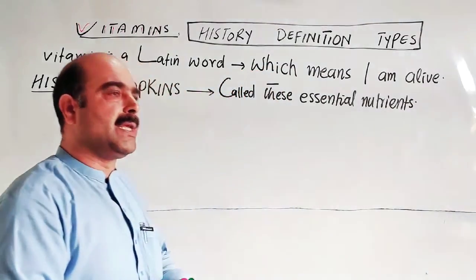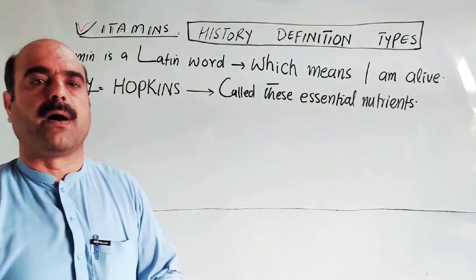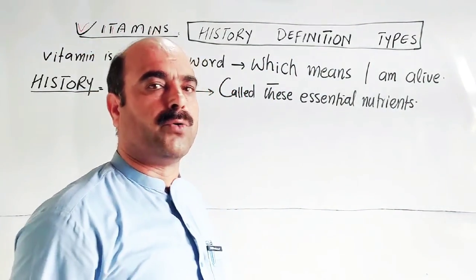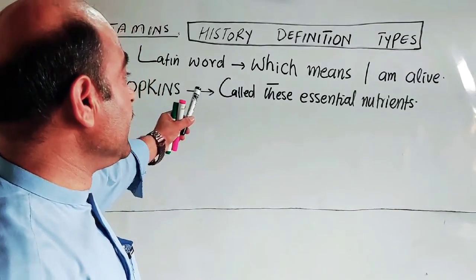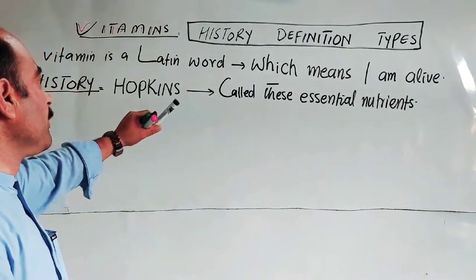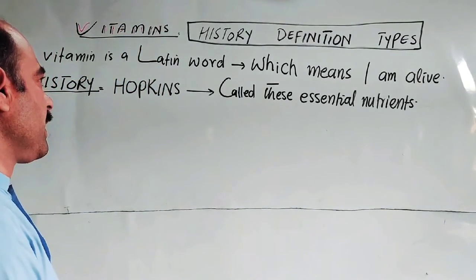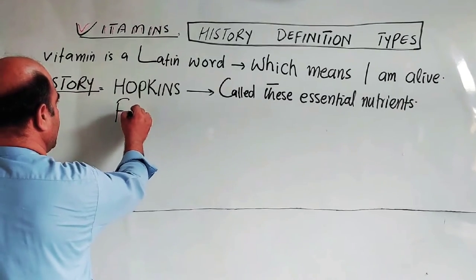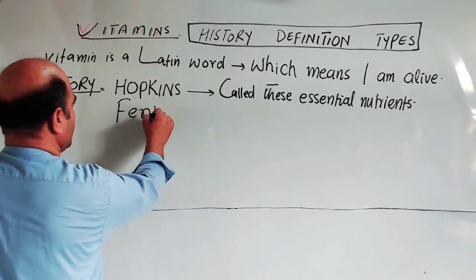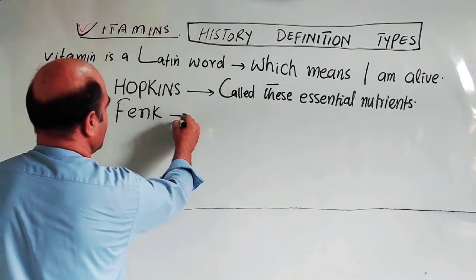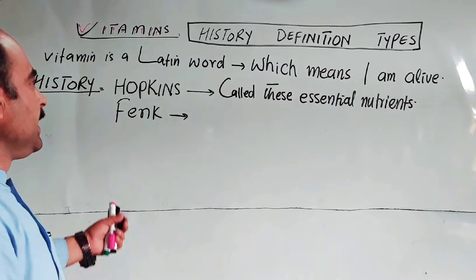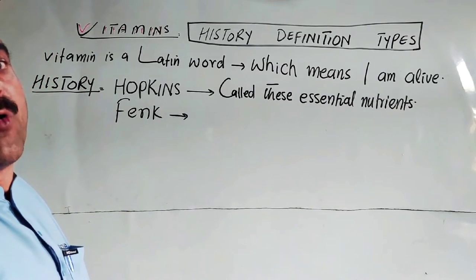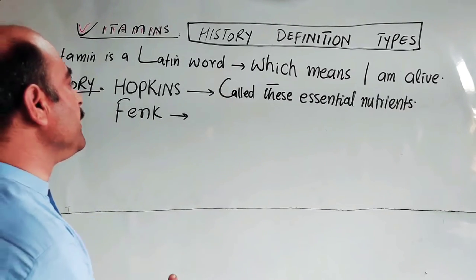These nutrients are essential for the body — they are organic compounds. Scientists gave them the original name 'vitamins'.